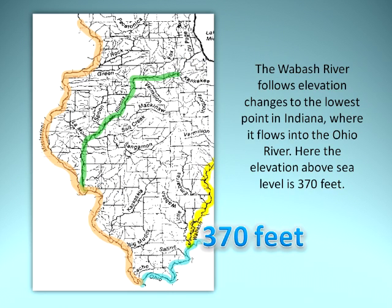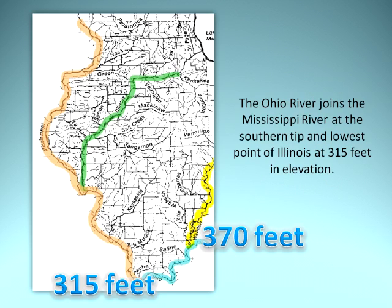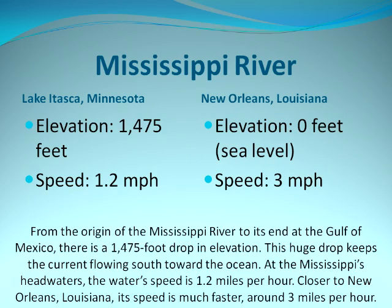The Wabash River follows elevation changes to the lowest point in Indiana, where it flows into the Ohio River at 370 feet above sea level. The Ohio River joins the Mississippi River at the southern tip and lowest point of Illinois at 315 feet in elevation. From the origin of the Mississippi River to its end at the Gulf of Mexico, there is a 1,475-foot drop in elevation, keeping the current flowing south. At the Mississippi's headwaters, water speed is 1.2 miles per hour; closer to New Orleans, Louisiana, its speed is around 3 miles per hour.